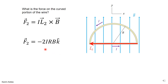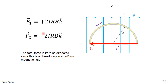So the total force on the curved part is −2IRB k̂, which is exactly the opposite sign of the force on the straight part. To summarize: the total force is F1 + F2, and when you add them you get exactly zero — as expected, because for any closed loop of wire with current in a uniform magnetic field, the total force must be zero.